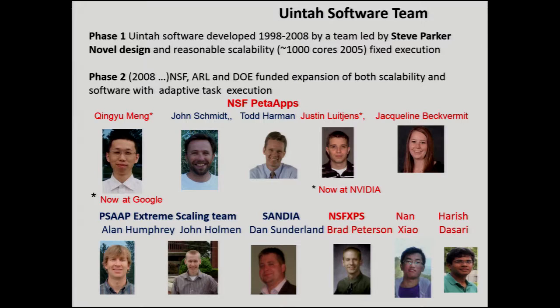The two key people who moved us along in terms of scalability were Ching Yu Meng and Justin Luchens. John Schmidt was responsible for releases. Jacqueline Beckvormitt did really interesting work on an application that pushed us very hard for almost six years. At the moment, we have a DOE PSAP center. John Holman is working on the Xeon Phi, Alan Humphrey on the GPUs, Dan Sunderland is one of the COCOS developers now pursuing a PhD in our lab. Brad Peterson has been working on the GPU, and Nan and Harish are working on different aspects of optimizing the runtime system.